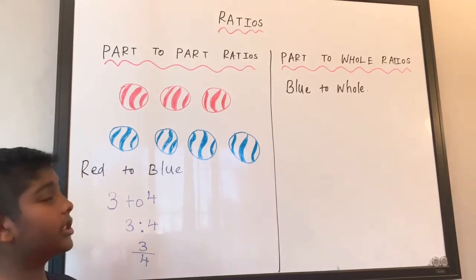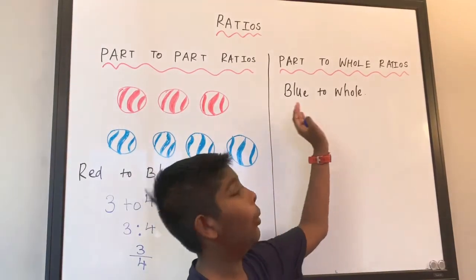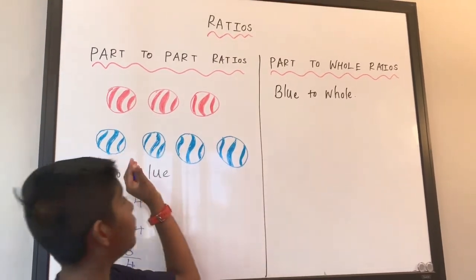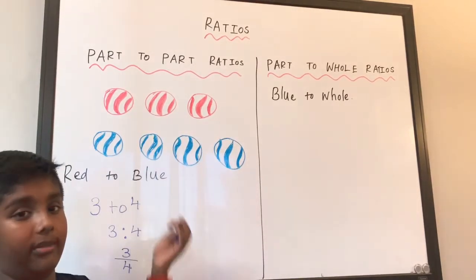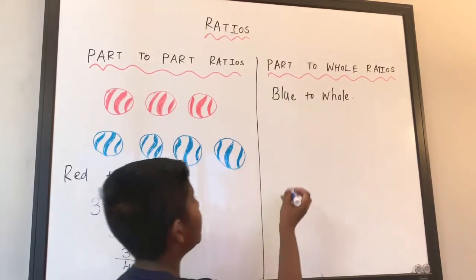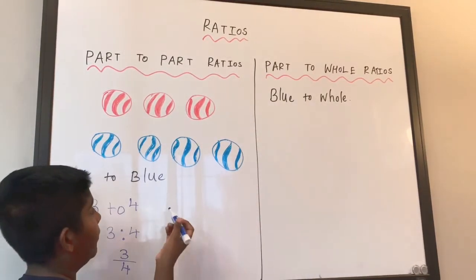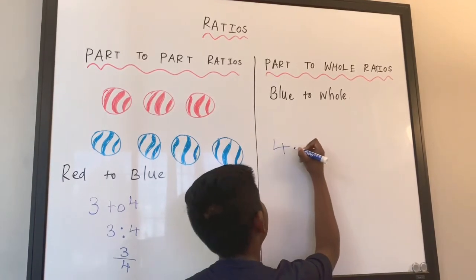Let's try one example. It's asking blue to whole. That means we have to find how many blue marbles there are and add up to get our total number of marbles. So how many blue marbles are in here? Four. So we're going to put four here.